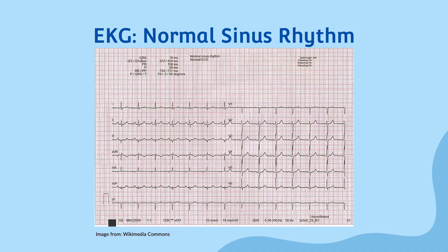Before we discuss how to identify normal sinus rhythm, we should first ask ourselves: what is normal sinus rhythm? Normal sinus rhythm is a regular heartbeat pattern that is produced by the sinoatrial node, which is located in the right atrium of the heart. In a normal sinus rhythm, the heart beats between 60 and 100 times per minute and has a regular pattern of electrical impulses. Let's go through identifying the key characteristics of normal sinus rhythm in a methodical way that can be used to assess all EKGs.